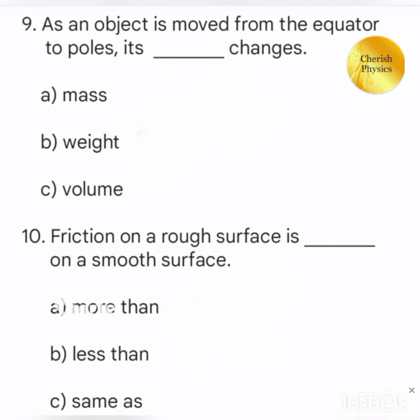As an object is moved from the equator to poles its dash changes. Friction on the rough surface is dash on the smooth surface.